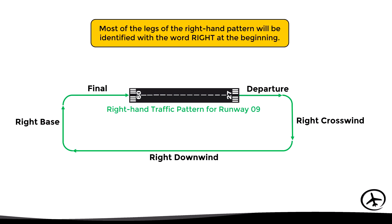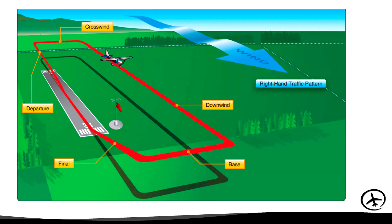In order to differentiate the legs of these two patterns, most of the legs of the right-hand pattern will be identified with the word 'right' at the beginning. This way, when talking to ATC or when stating intentions through the radio at an uncontrolled airport, there is no ambiguity and everyone will know with certainty which leg of the pattern is being referred to. Here we can see a 3D representation of a right-hand pattern for runway 36.